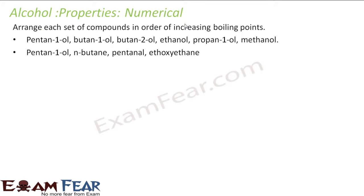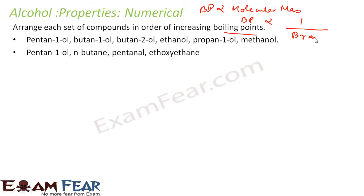Now let's take some numericals. We have to arrange the following in order of boiling point: what we have seen is boiling point is directly proportional to molecular mass and inversely proportional to branching. The compounds are: pentane-1-ol, butane-1-ol, butane-2-ol, ethanol, propanol, and methanol.